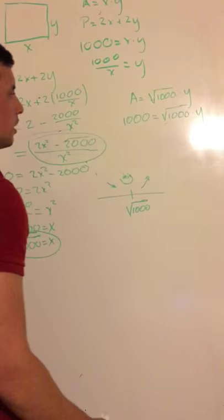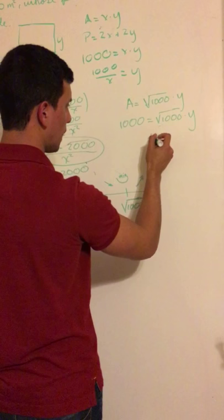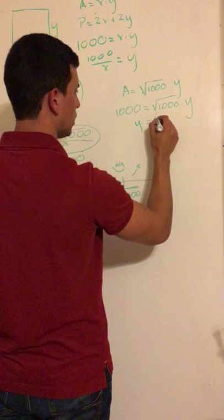Using basic algebra rules, you will know that the square root of 1000 times the square root of 1000 gives you 1000. So the answer for this question is y equals the square root of 1000 as well.